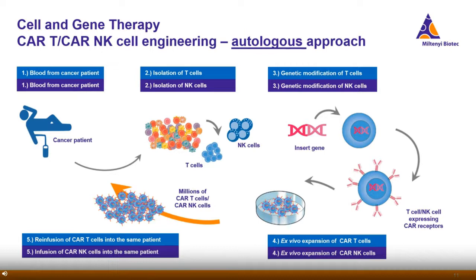Now we will take a closer look at the different engineering procedures. Basically we have two options: the autologous and the allogeneic approach. The autologous approach includes the same steps whether you start with T cells or NK cells. For the autologous approach, T cells or NK cells are taken from a cancer patient, genetically modified to express the CAR — for example using viral transduction or electroporation — and then the engineered cells are expanded ex vivo and finally re-infused into the same patient.